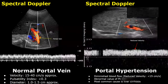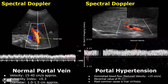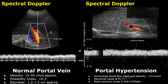Here is a spectral Doppler waveform for the portal vein. This is the normal Doppler waveform — it is a monophasic waveform consisting of forward flow. The blood velocity can vary but it is usually between 15 and 40 centimeters per second.